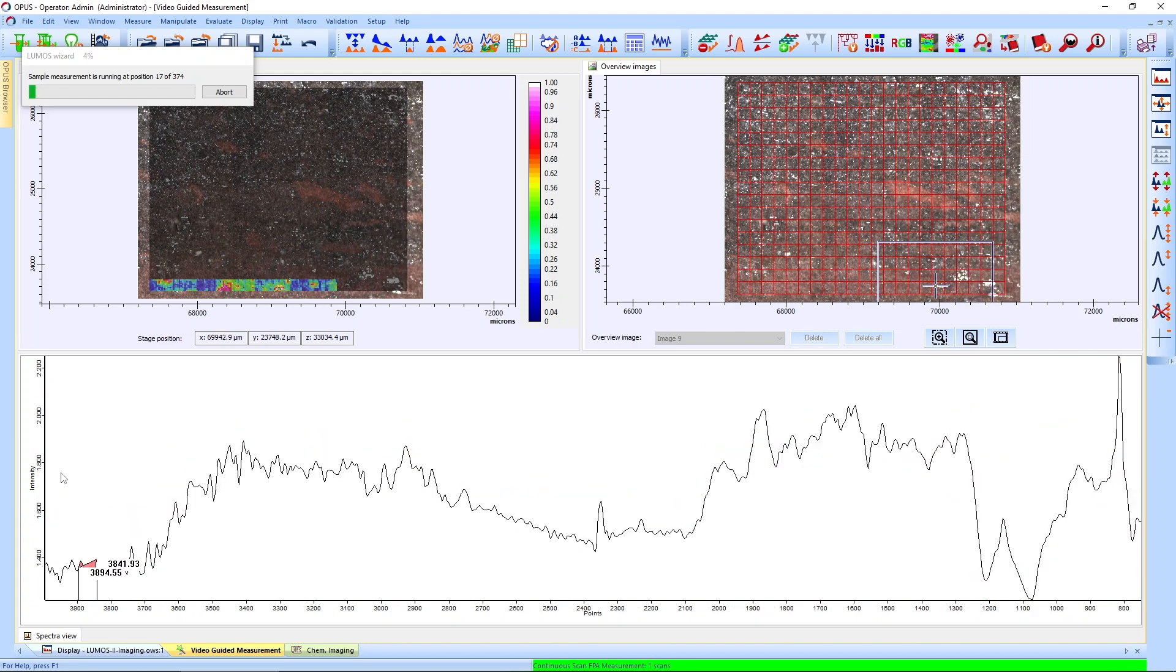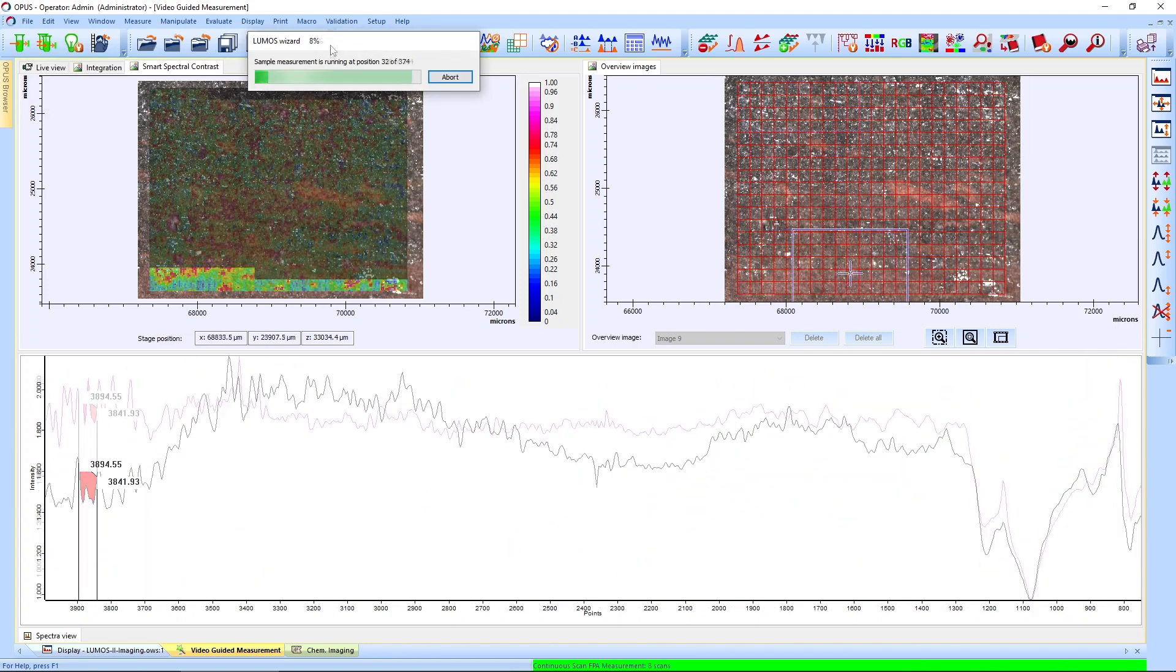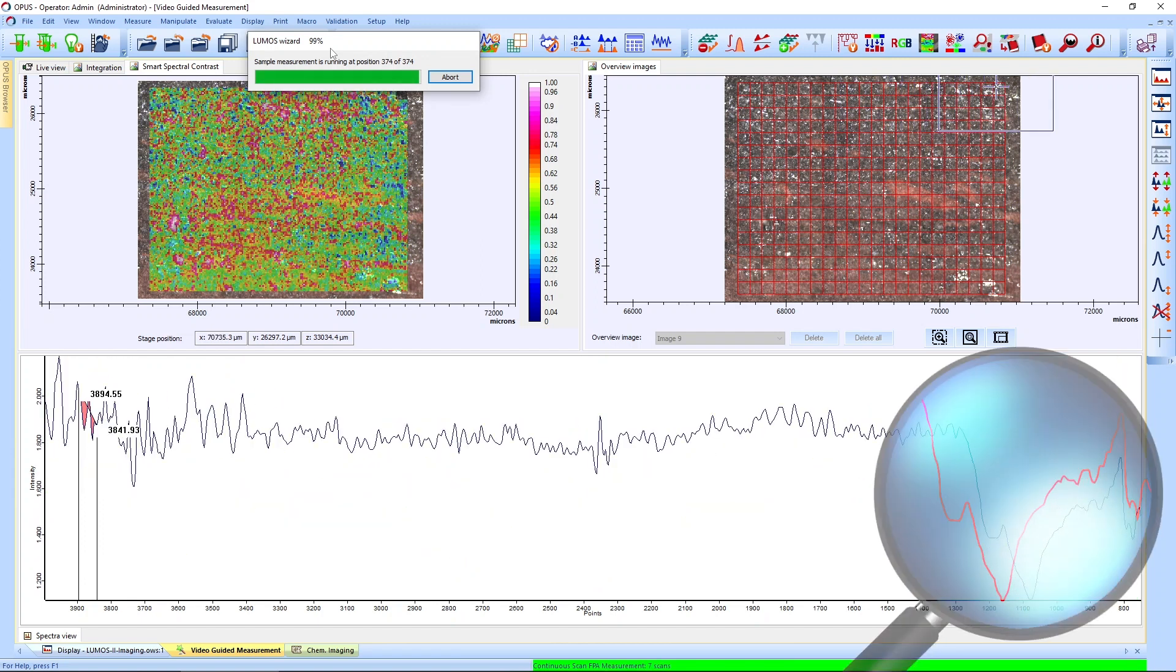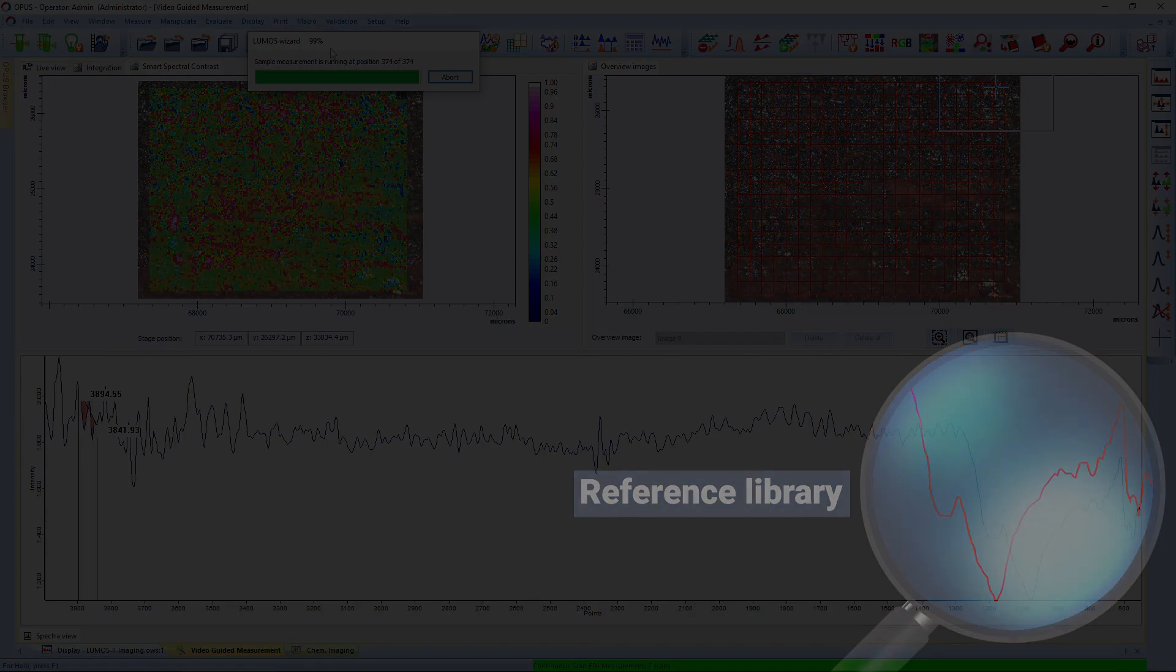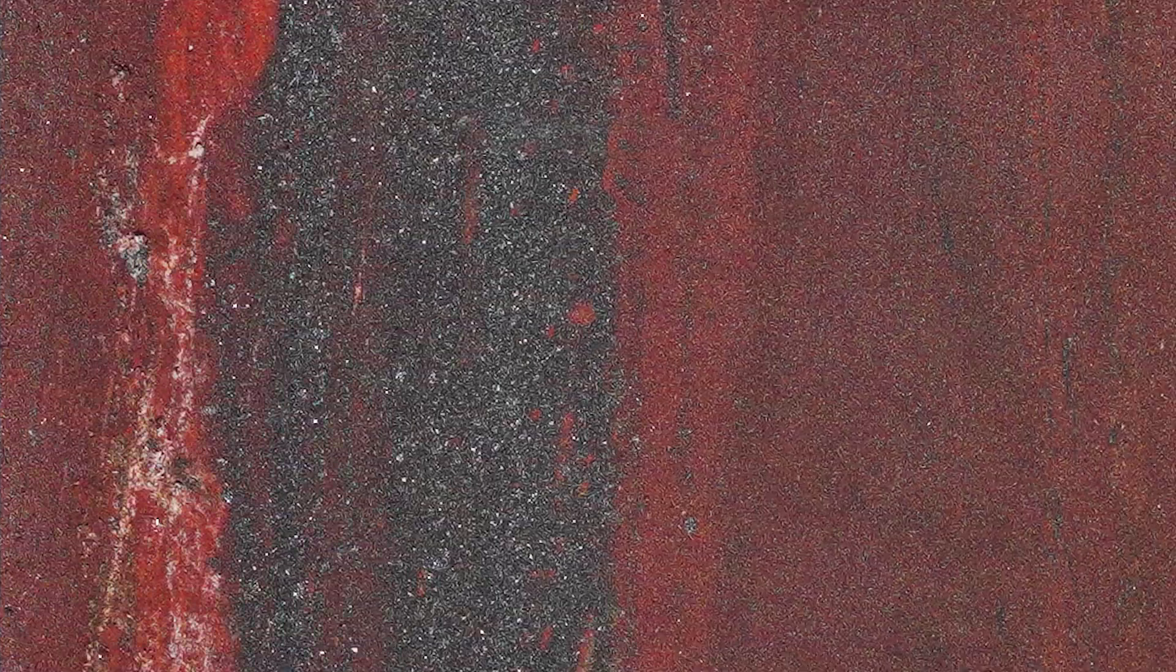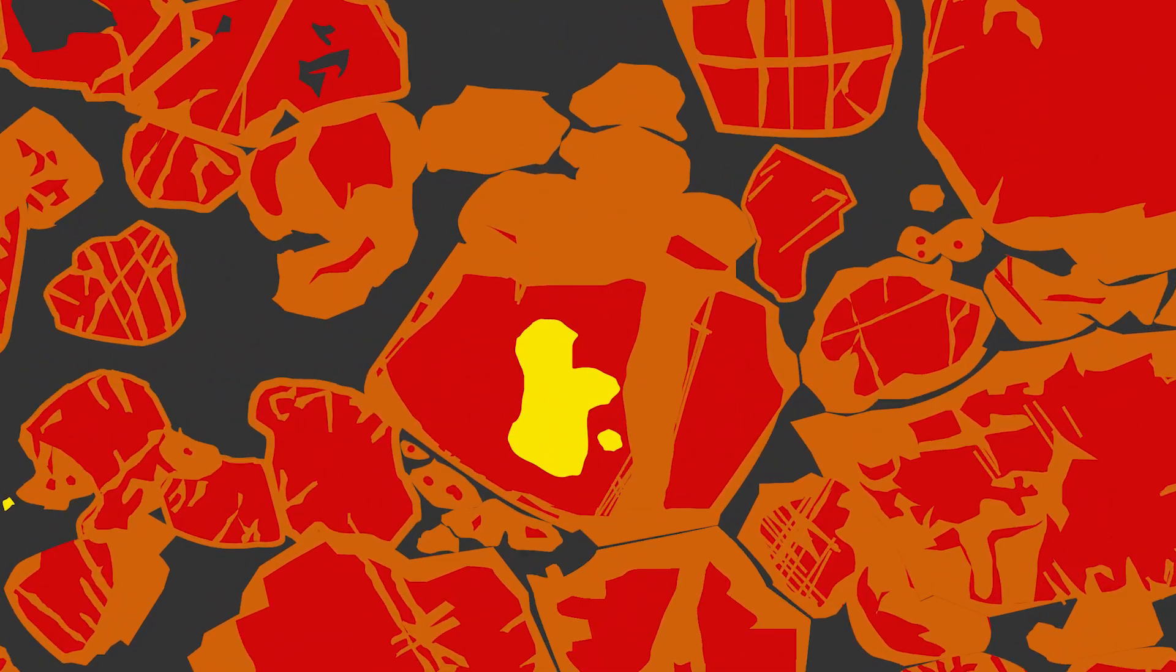As you can see, the creation of the chemical image only takes about an hour. After the mapping is done, the comparison of the measured spectra with the library allows us to determine the mineral identity.